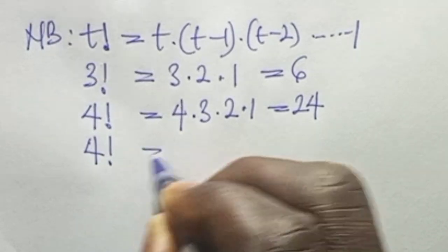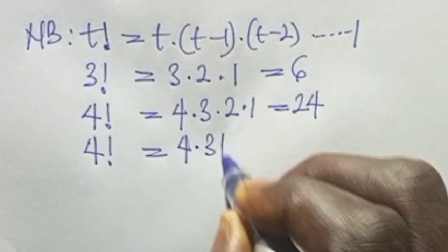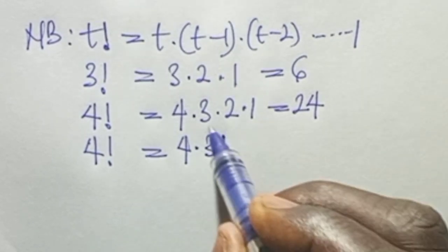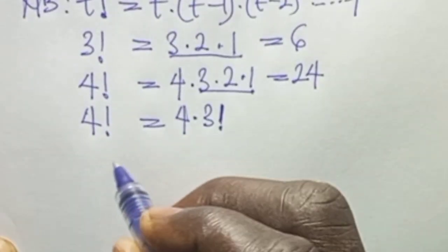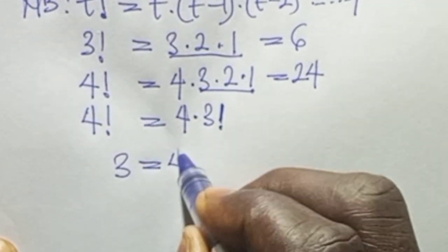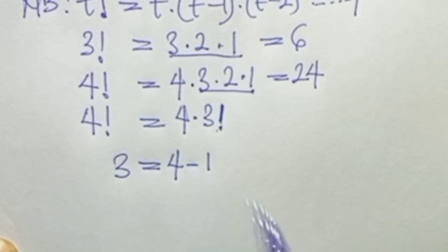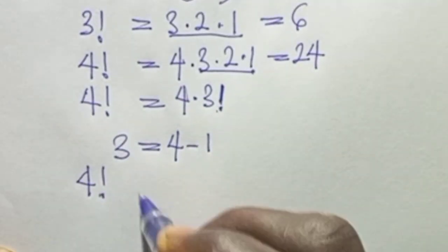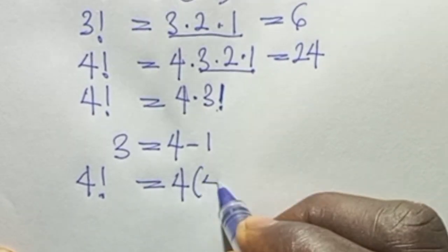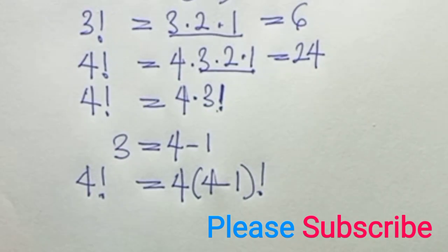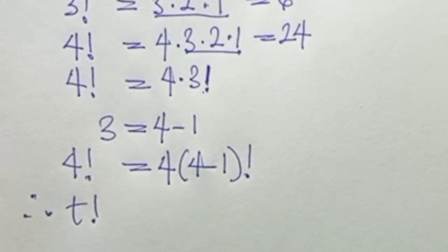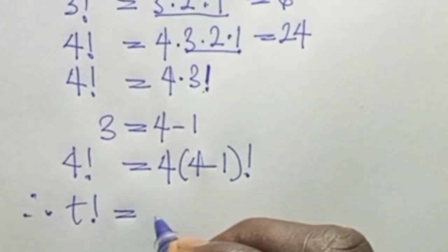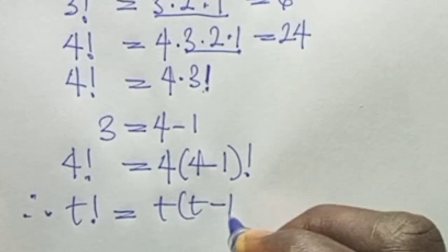From observation, you can clearly see that 4 factorial equals 4 times 3 factorial, because 3 factorial is equal to 4 minus 1 factorial. So 4 factorial equals 4 into (4 minus 1) factorial. Therefore, t factorial equals t times (t minus 1) factorial.